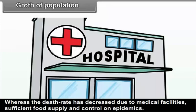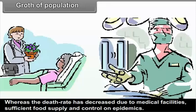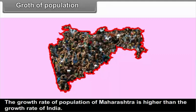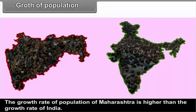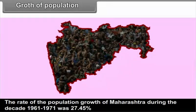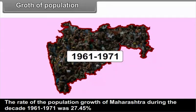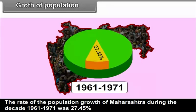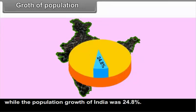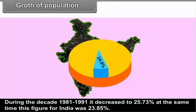The birth rate is high because of poverty, illiteracy, and insufficient propaganda about family planning, whereas the death rate has decreased due to medical facilities, sufficient food supply, and control on epidemics. This has resulted in an increase in the population of Maharashtra. The growth rate of Maharashtra is higher than that of India. During the decade 1961 to 1971, Maharashtra's growth rate was 27.45% while India's was 24.8%.